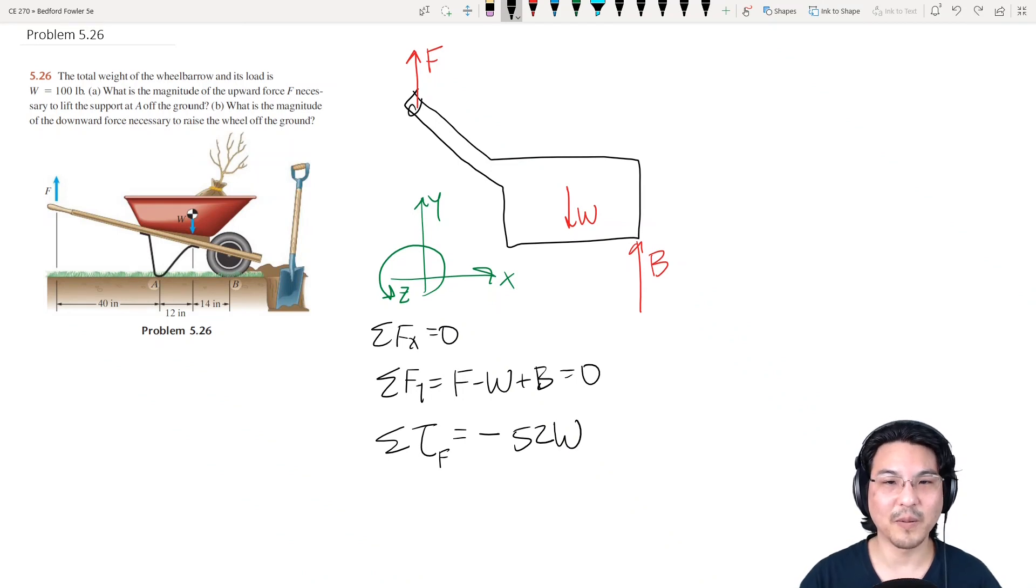Okay, about this point would go this way, counterclockwise, which is in the positive Z direction. Then here to here, the lever arm is 66. Okay, so now if you solve what's known and what's unknown, so we know the weight, we don't know this, we don't know this.